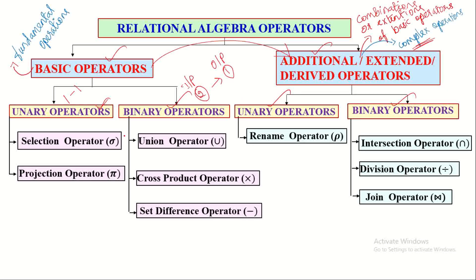Under unary operators in basic operators: selection and projection operators are classified, because they take a single table as input and produce a single table as output. Under binary operators in basic operators: union operator, cross product operator, and set difference operators are classified. Coming to additional operators, the rename operator is classified under unary operators, while intersection, division, and join operators are classified under binary operators.